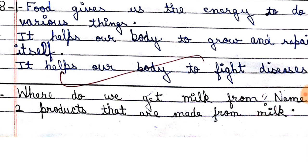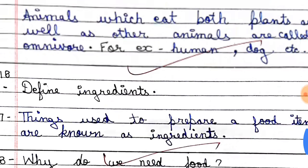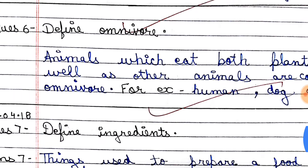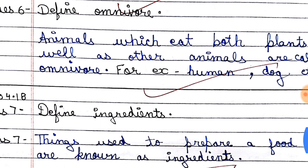We get milk from cows, buffaloes and goats. From milk, we can make cheese, butter and paneer. So our question answers are complete. Thank you so much.